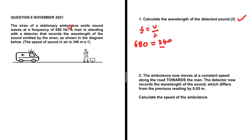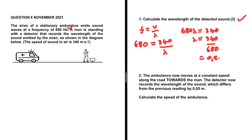We are interested in the wavelength, so if we cross-multiply we get: 680 × λ = 340, so the wavelength equals 340 divided by 680, which equals 0.5 meters. That is the wavelength of the detected sound.